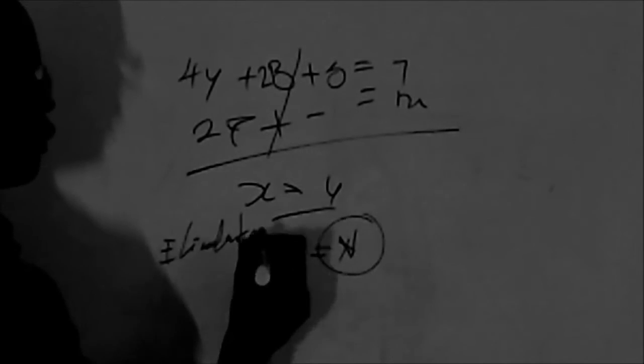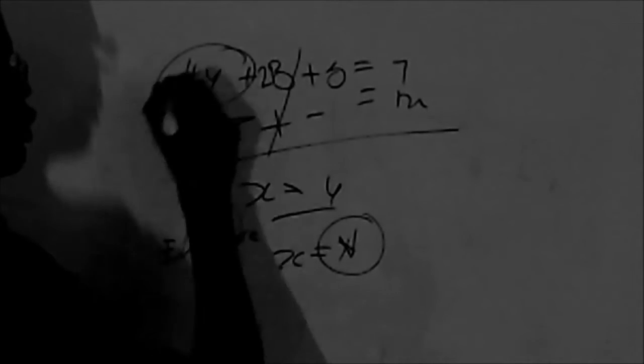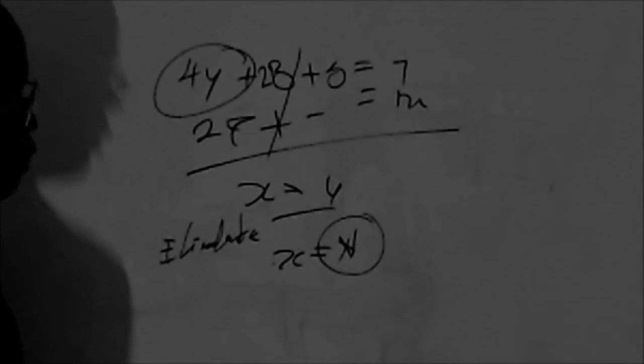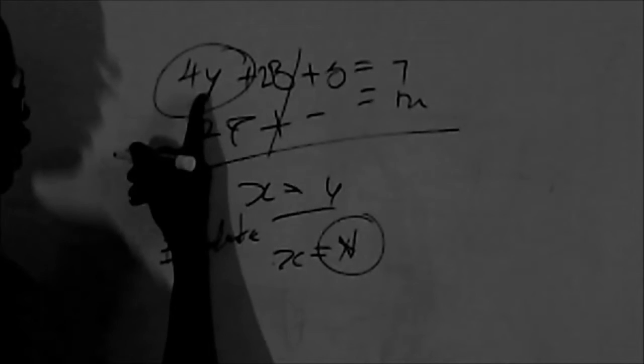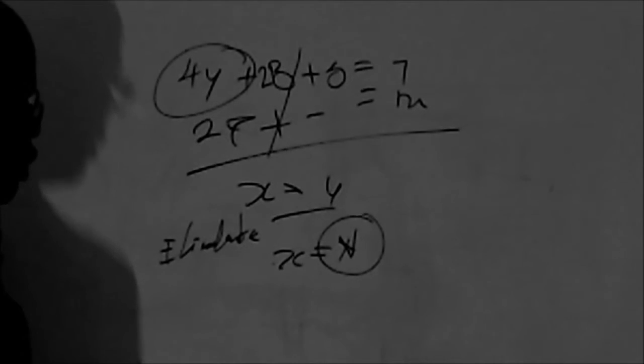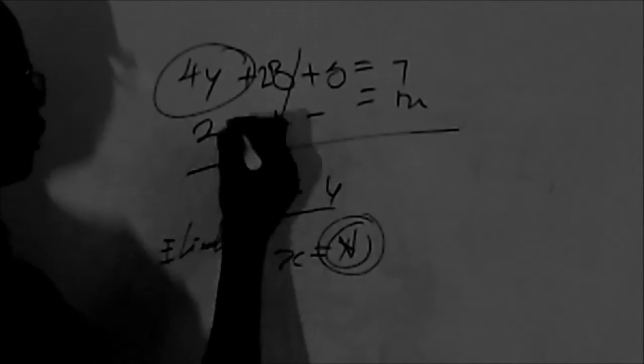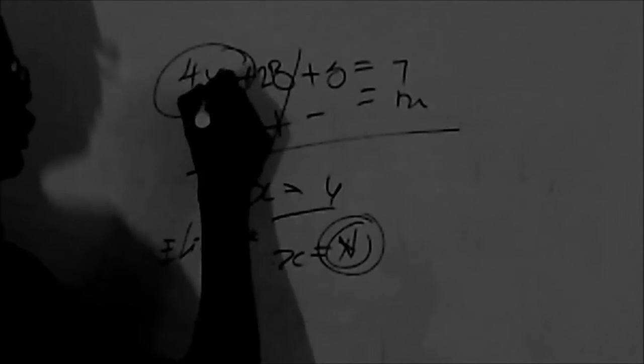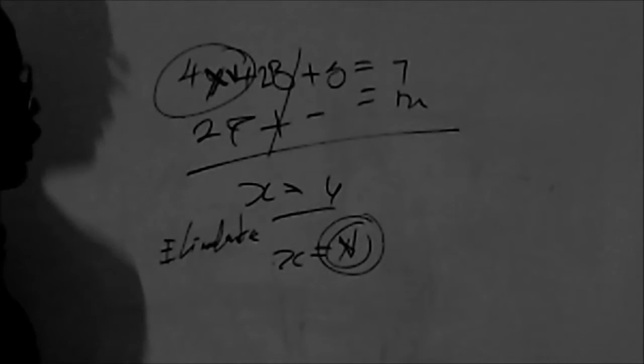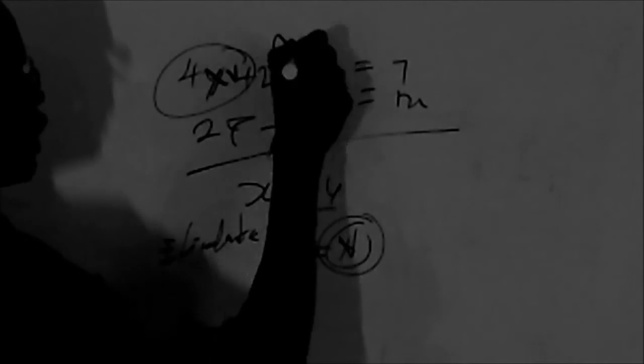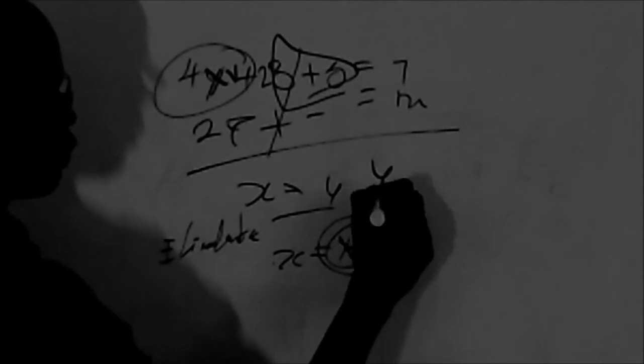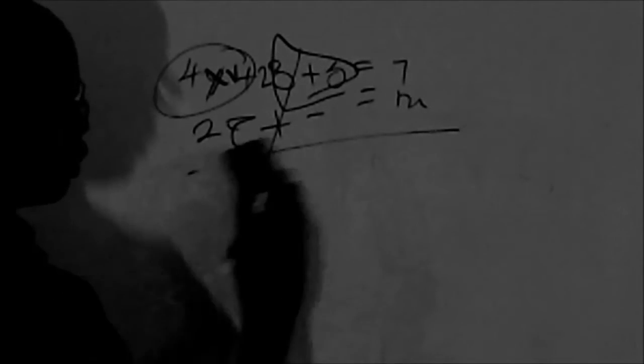After we get the value of X, we replace with that value and we go here, whatever value we got, and then we can find the value of Y. So that's how you do it.